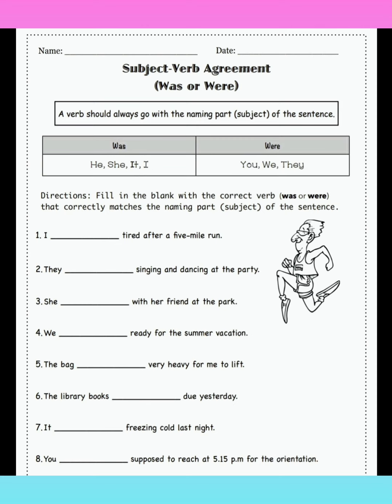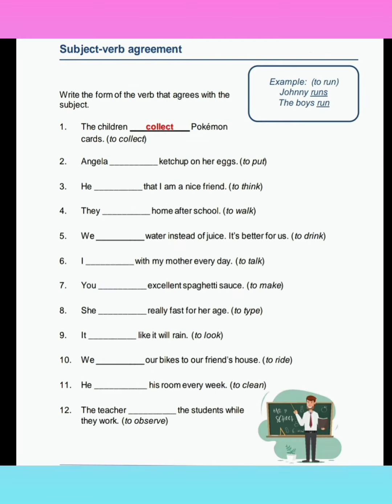I hope you can do it. Fill in the blanks with 'was' or 'were': 'I ___ tired after a five-mile run.' 'They ___ singing and dancing at the party.' 'She ___ with her friend at the park.' 'We ___ ready for the summer vacation.' There are several more examples and exercises that you have to do.